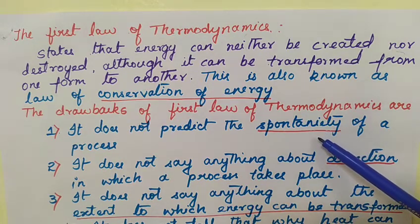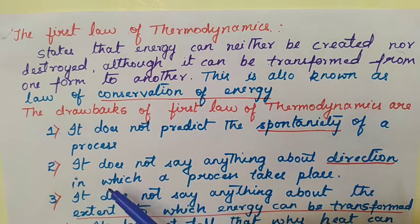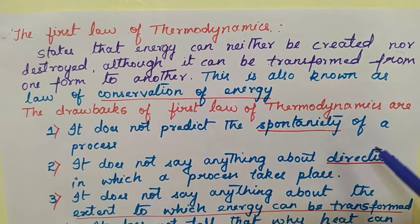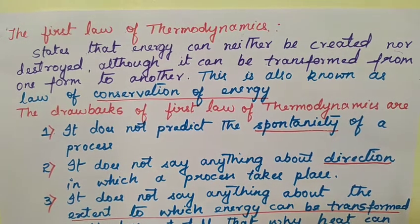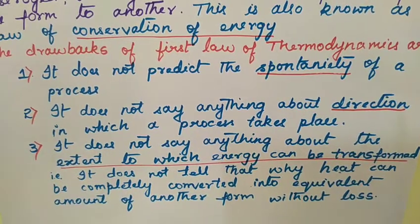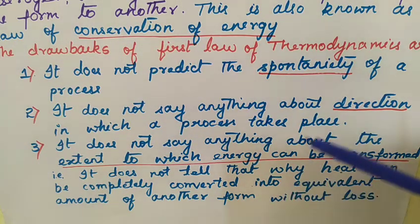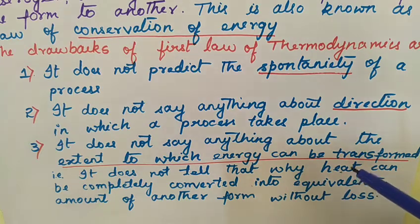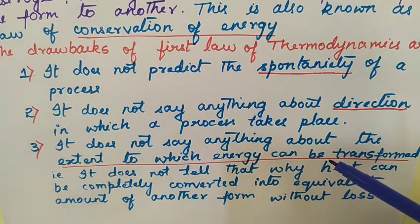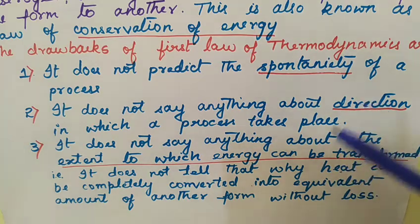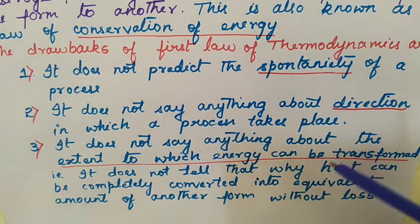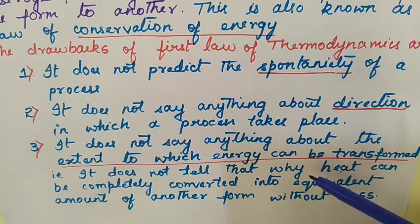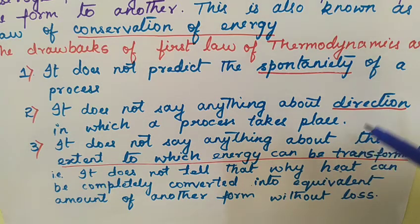The first law will not say whether the reaction occurs on its own or not. The second drawback is it will not say anything about the direction of any physical or chemical process. The third drawback is it will not say anything about the extent to which energy can be transformed — whether conversion is 100% or less than 100%. The extent of conversion is not explained by the first law, which only says energy and mass are conserved.